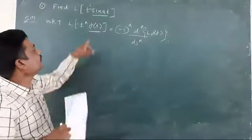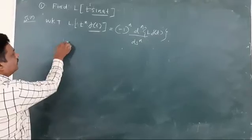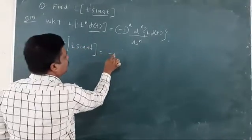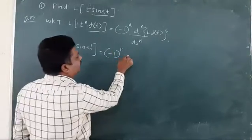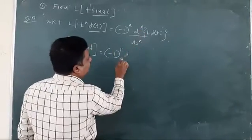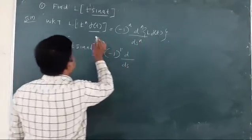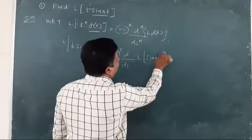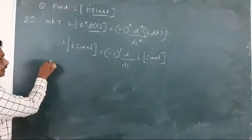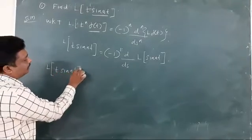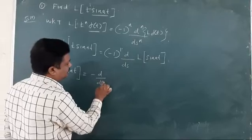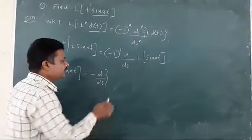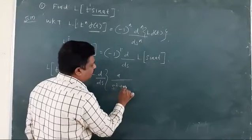Therefore, L{t · sin(at)} becomes (-1)^1 · d/ds of L{sin(at)}. So that is L{t · sin(at)} = -d/ds of L{sin(at)}. We know that L{sin(at)} = a/(s² + a²).